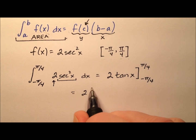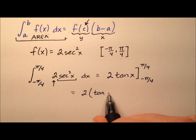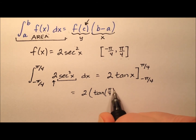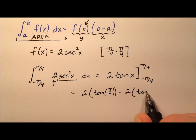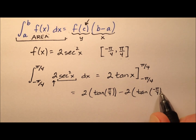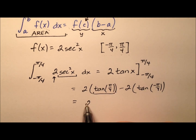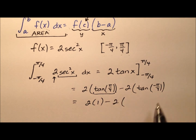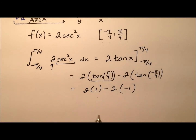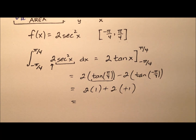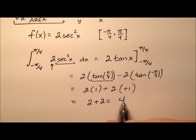So it's 2 times the tangent of pi over 4 minus 2 times the tangent of negative pi over 4. The tangent of pi over 4 is 45 degrees, which equals 1, so that's 2 times 1. The tangent of negative pi over 4 is negative 1, so minus 2 times negative 1. The two negatives make it a positive, so 2 plus 2 equals 4.